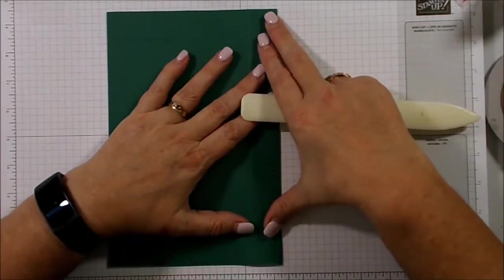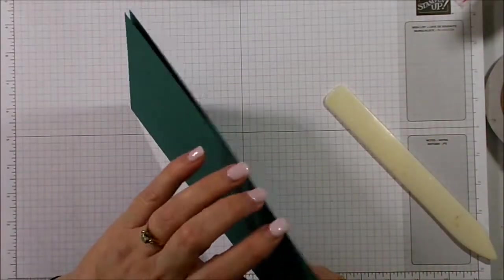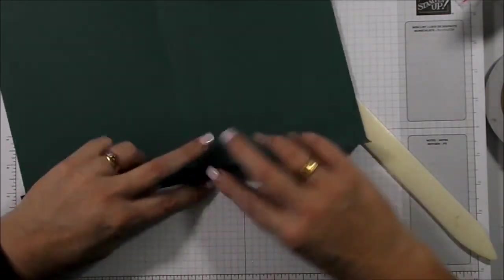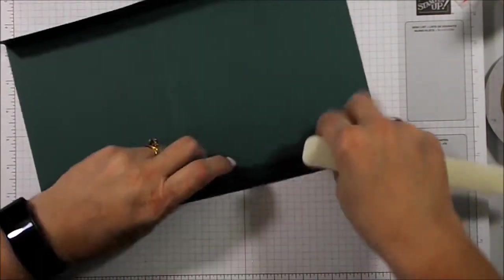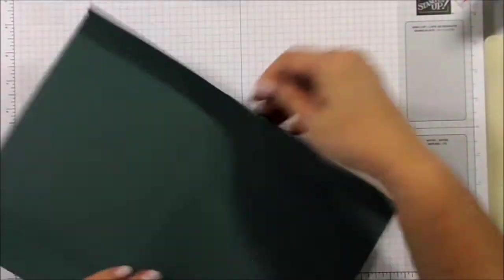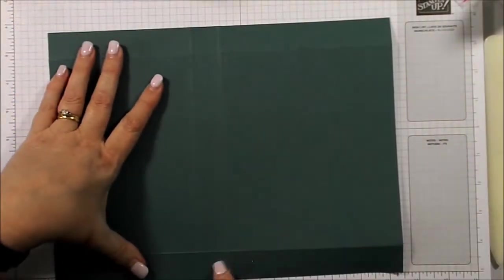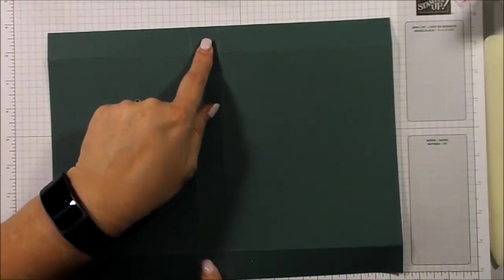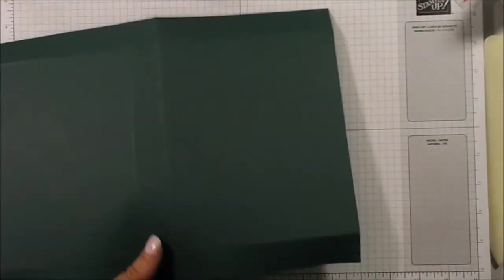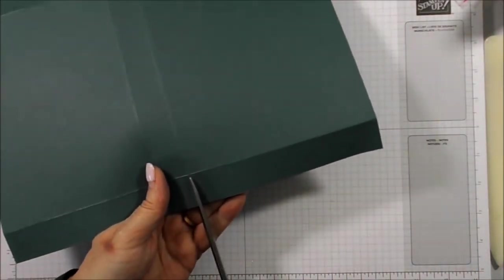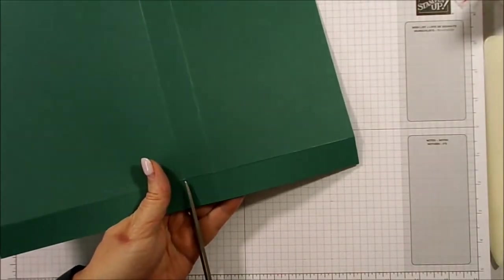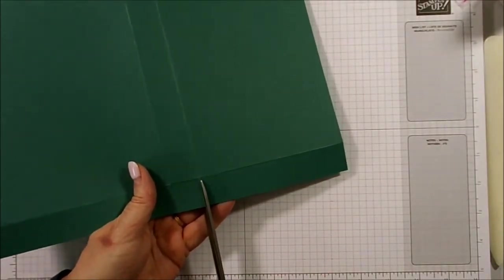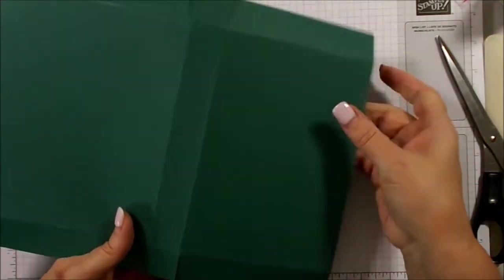And what we're going to do is fold and burnish on each of the score lines. And then, on these two squares here, which are 1 inch by 1 inch, right in the middle of the length of the paper, we're going to trim up on the outside of each of those scores, like so.